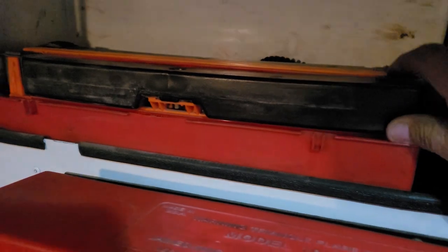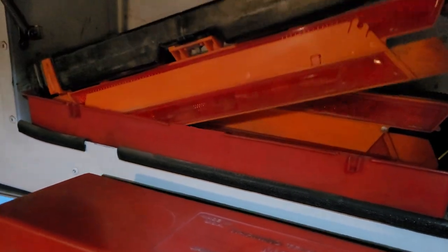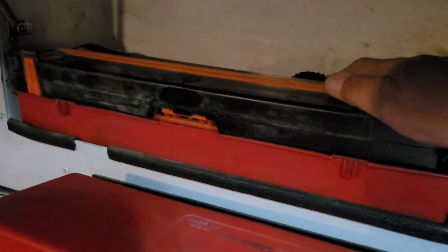Then our warning devices are commonly known as triangles. You see a semi truck broken down on the side of the road, there's triangles out behind them. These are our warning devices.